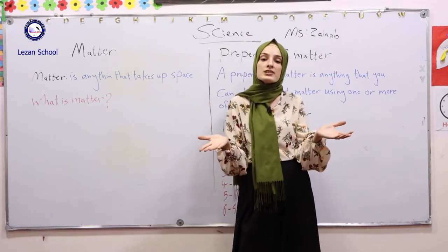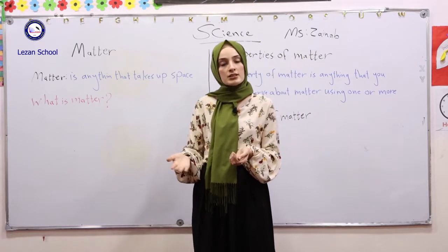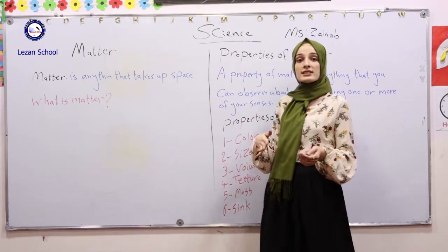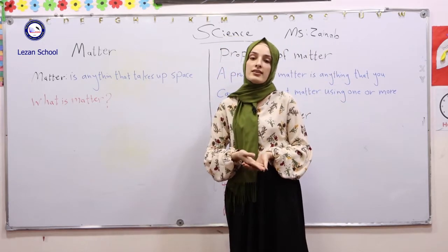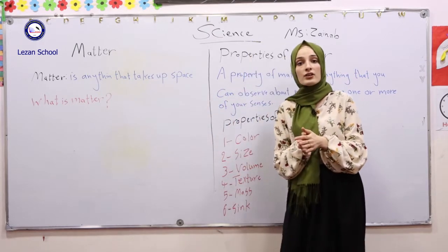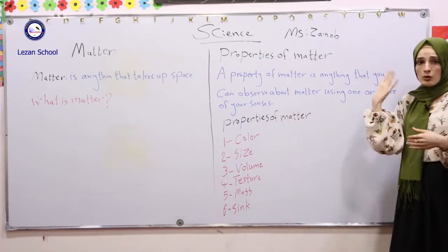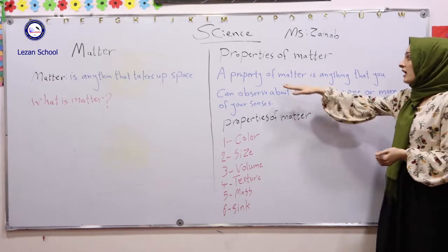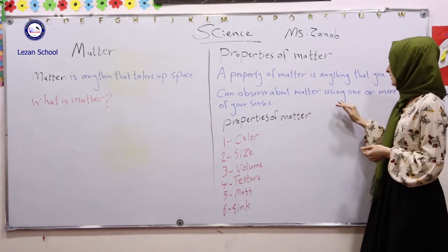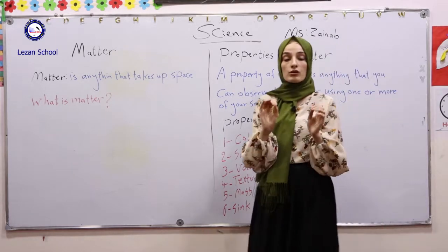We have many properties of matter. How can you observe them? By using your senses, you can observe the properties of matter — for example, the sense of sight, the sense of taste, the sense of hearing, the sense of touch. The property of matter is anything that you can observe about matter using one or more of your senses.